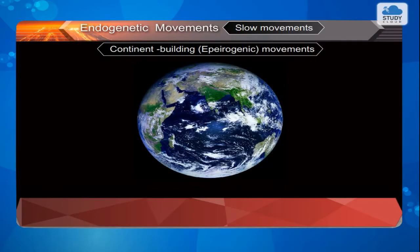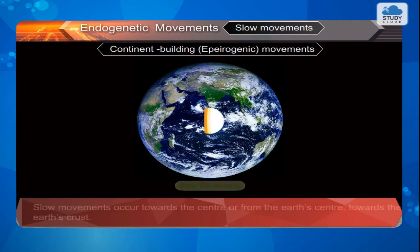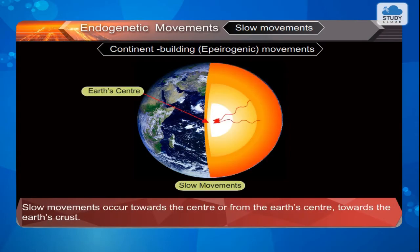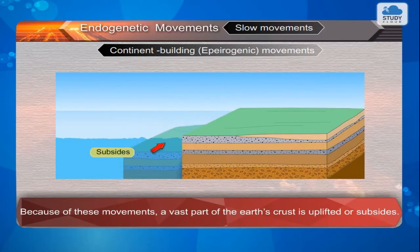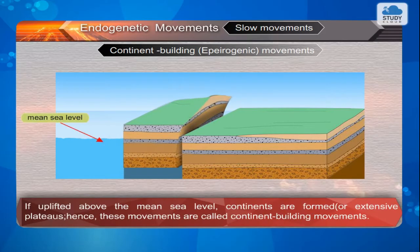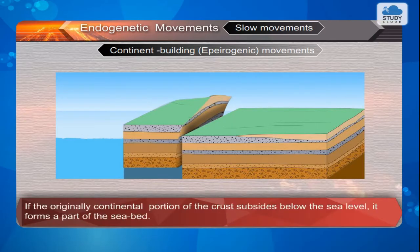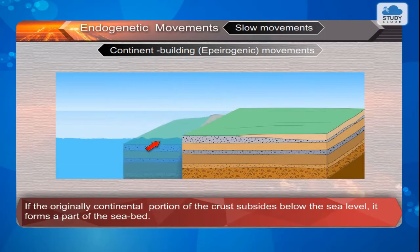Slow movements — B. Continent building: Aperigenic movements. Slow movements occur towards the center or from the earth's center towards the earth's crust. Because of these movements, a vast part of the earth's crust is uplifted or subsides. If uplifted above the mean sea level, continents or extensive plateaus are formed. Hence, these movements are called continent-building movements. If the originally continental portion of the crust subsides below the sea level, it forms a part of the seabed.